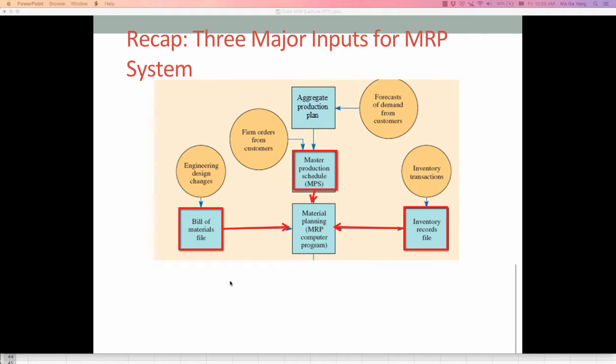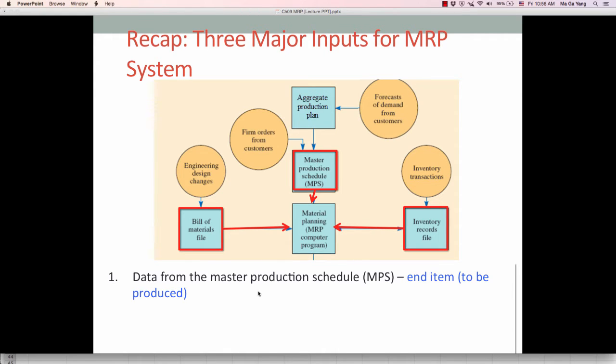As you know, MRP system is run by MRP computer program. So we need three major inputs to be entered into MRP computer program. The first major input is the data from the master production schedule. We call MPS or simply master schedule.